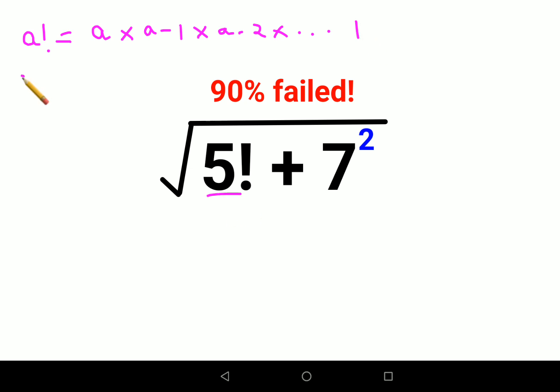So what is 5 factorial? Let's do it. 5 factorial will be 5 into 4 into 3 into 2 into 1. And when you do the multiplication, 5 into 4 is 20, into 3 is 60, into 2 is 120, into 1 is again 120.